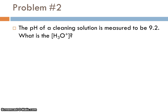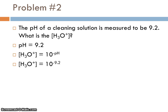Let's go on and do another problem. The pH of a cleaning solution is found to be 9.2. You stick your pH meter in, and that's what you get. What is the hydronium ion concentration? Well, we know that the pH is 9.2. We also know that the hydronium ion concentration is equal to 10 raised to the negative pH. You do need to make sure you have that negative pH in there. That's really important. So 10 raised to the negative 9.2, and the answer comes out to be 6 times 10 to the minus 10 molar.